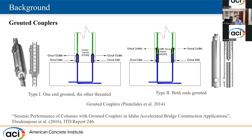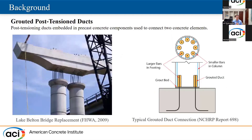Over the years, a bunch of connections have been developed. In this slide, you can see one of the connections common in Utah and Idaho, which is called the grouted coupler. Although tests show they have adequate seismic behavior, that's not the only concern — if there is any misalignment, the construction will be an issue. Another type of connection is grouted post-tension ducts, where rebar comes out of one element and goes inside the other. But again, this kind of connection has a tolerance issue, and sometimes they don't match, causing construction difficulties.